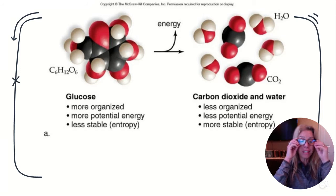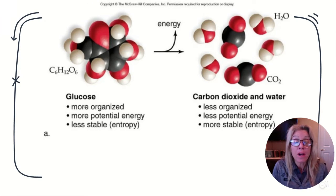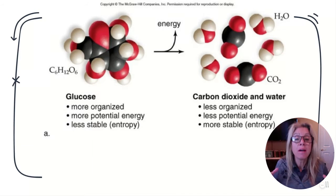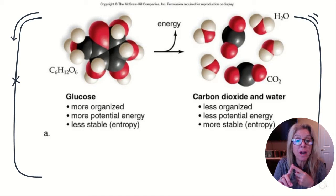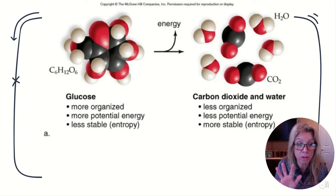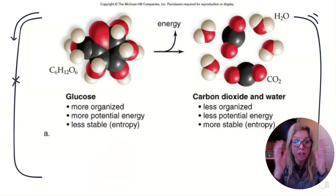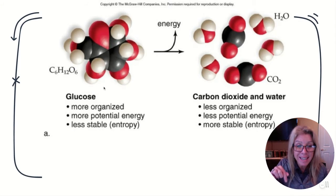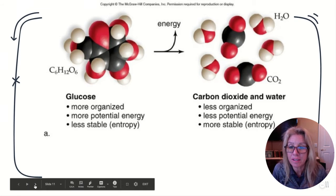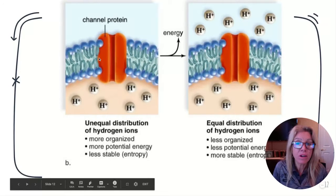We need to input energy to fight entropy in our bodies in order to maintain homeostasis. Keep in mind: more together and more organized means less entropy but more potential. We'll revisit this theme throughout the next two chapters.